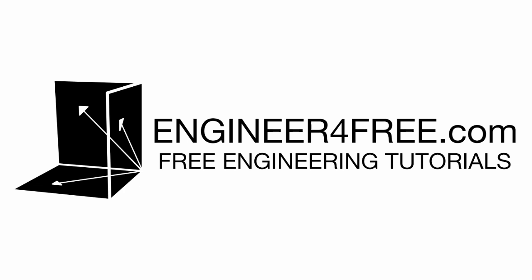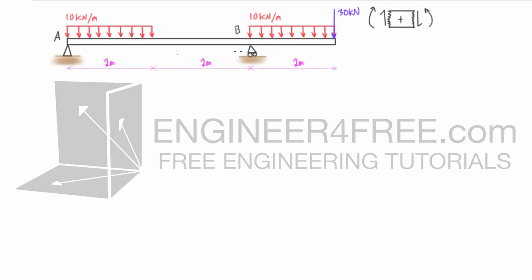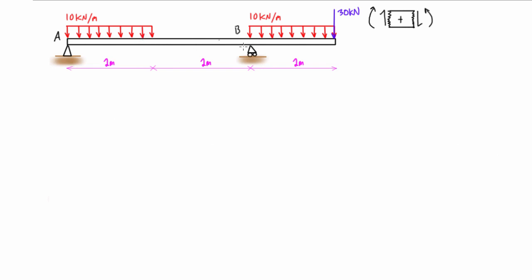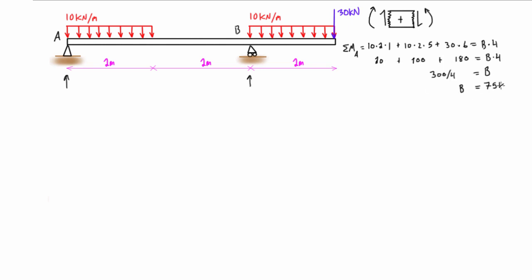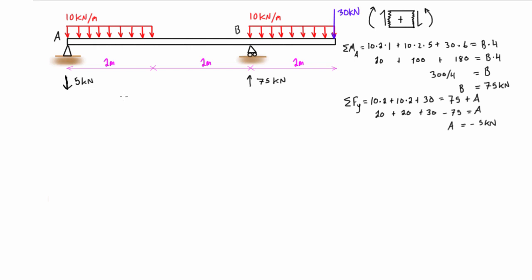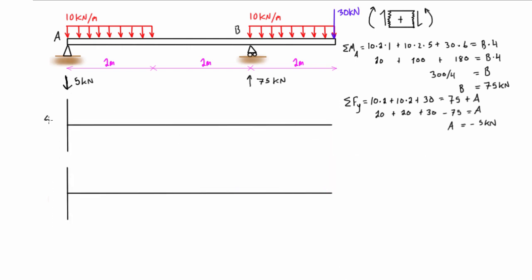Welcome back. In this video we're drawing shear force diagrams and bending moment diagrams. We have an overhanging beam with two distributed loads and a point load. The first thing we want to do before drawing the diagrams is figure out the reactions at A and B. It turns out that A is 5 kilonewtons down and B is 75 kilonewtons up.